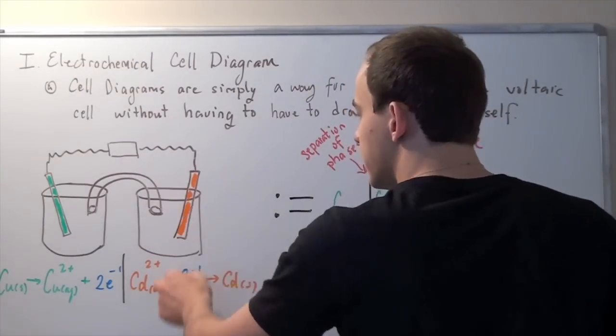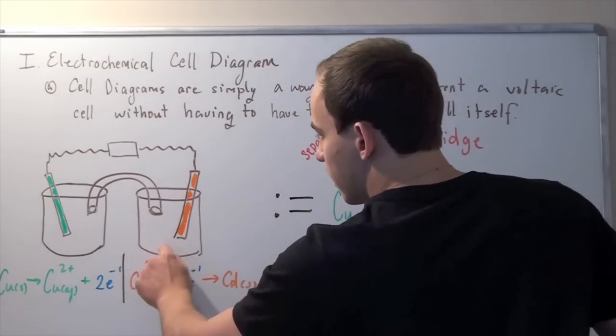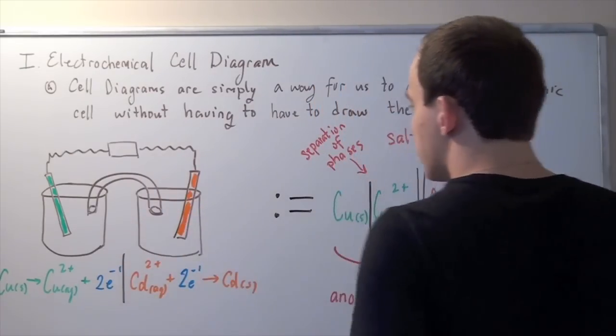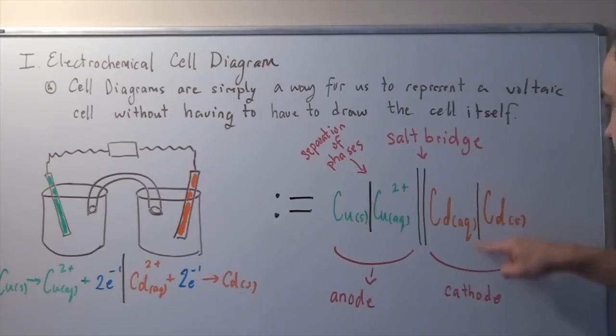The same concept on this side. This cadmium bar is separated by phases in this solution. We have the ions here and the solid cadmium in the bar. This vertical line represents these two phases.